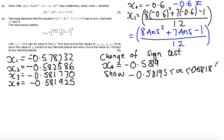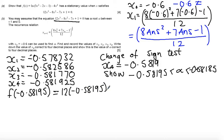So I want to show that the alpha lies between minus 0.58195 and minus 0.58185. The way I do this is with this change of sign test. So I do f of minus 0.58195. Now remember that your original function, what we're trying to solve here is 12x cubed minus 8x squared minus 7x plus 1. So what I'm saying is that this is going to be 12 lots of minus 0.5819 cubed plus 8 lots of minus 0.5819 squared.